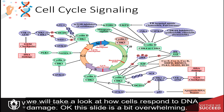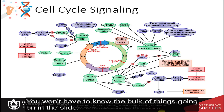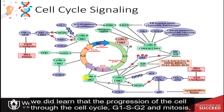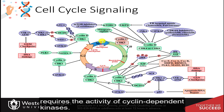This slide is a bit overwhelming. You won't have to know the bulk of things going on in this slide. But in learning about the process of DNA replication, we did learn that the progression of the cell through the cell cycle — G1, S, G2, and mitosis — requires the activity of cyclin-dependent kinases.